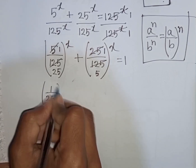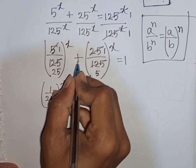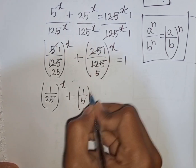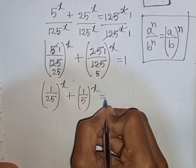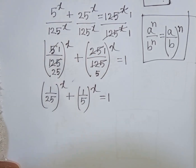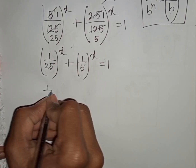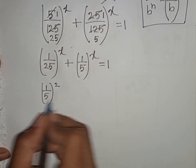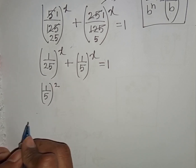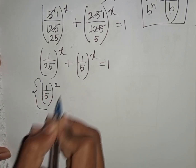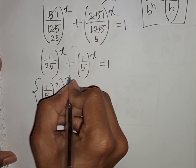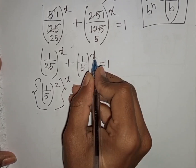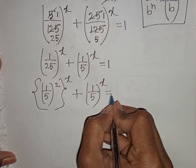So we have (1 over 25) power x plus (1 over 5) power x is equal to 1. Now 1 over 25 can be written as (1 over 5) squared, since 1 squared is 1 and 5 squared is 25. So we have ((1/5)^2)^x plus (1/5)^x equals 1.